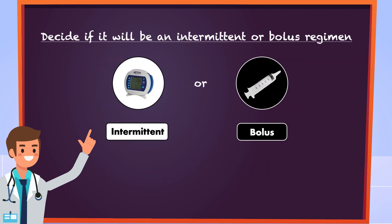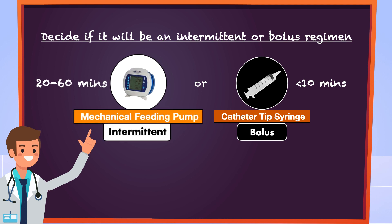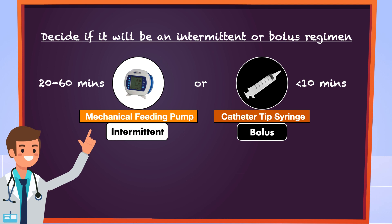This brings us to the second-to-last step where we decide if it will be an intermittent or bolus regimen. An intermittent regimen is typically infused using a mechanical feeding pump with sessions lasting anywhere from 20 to 60 minutes. The bolus method is typically performed with a catheter tip syringe with sessions lasting less than 10 minutes. If the patient has poor functional status and is expected to remain in a medical institution, it may be helpful to use the mechanical pump. Since Jane is active, capable of feeding herself, and planning to go home, we can anticipate she will be able to successfully carry out a bolus regimen.